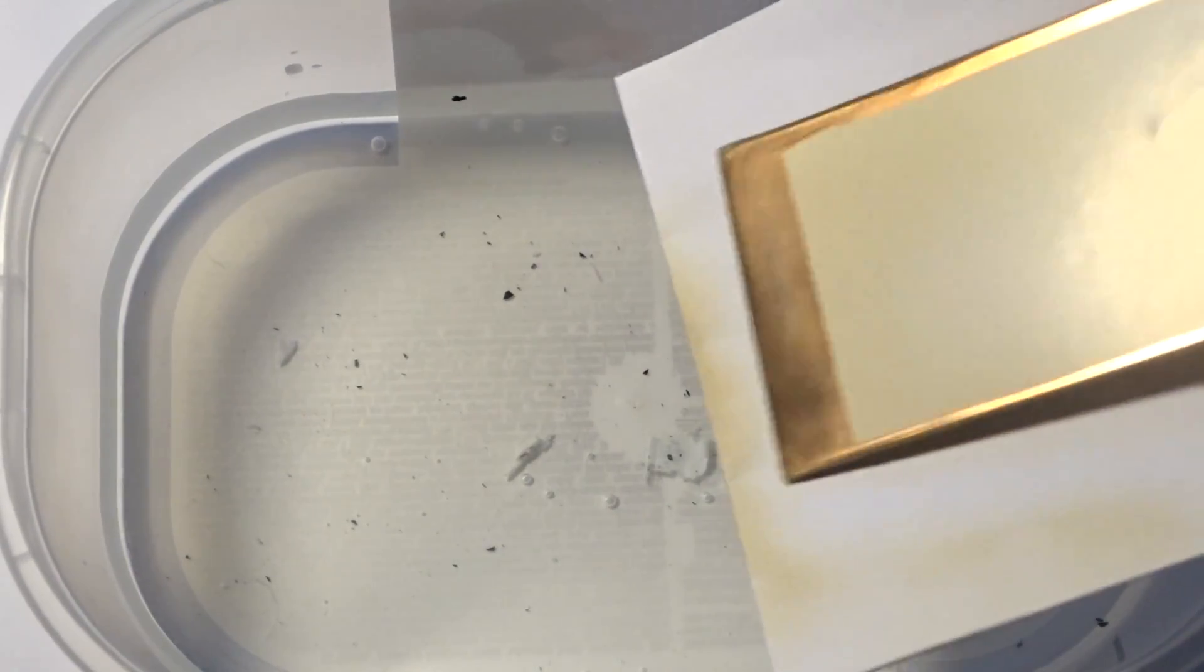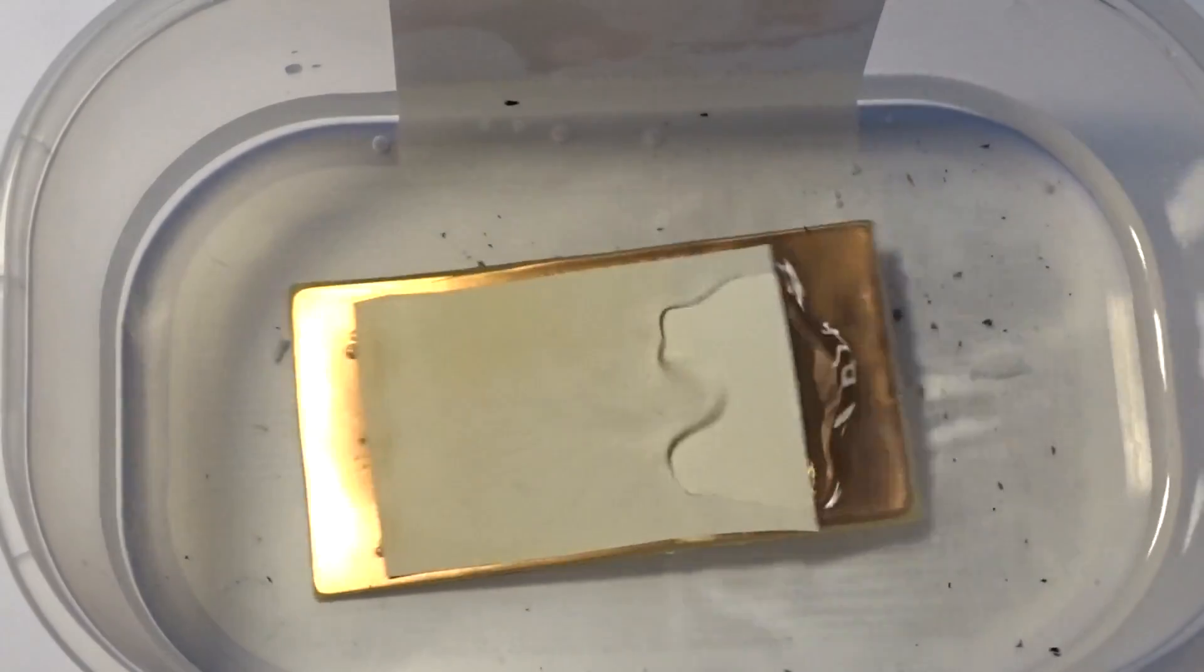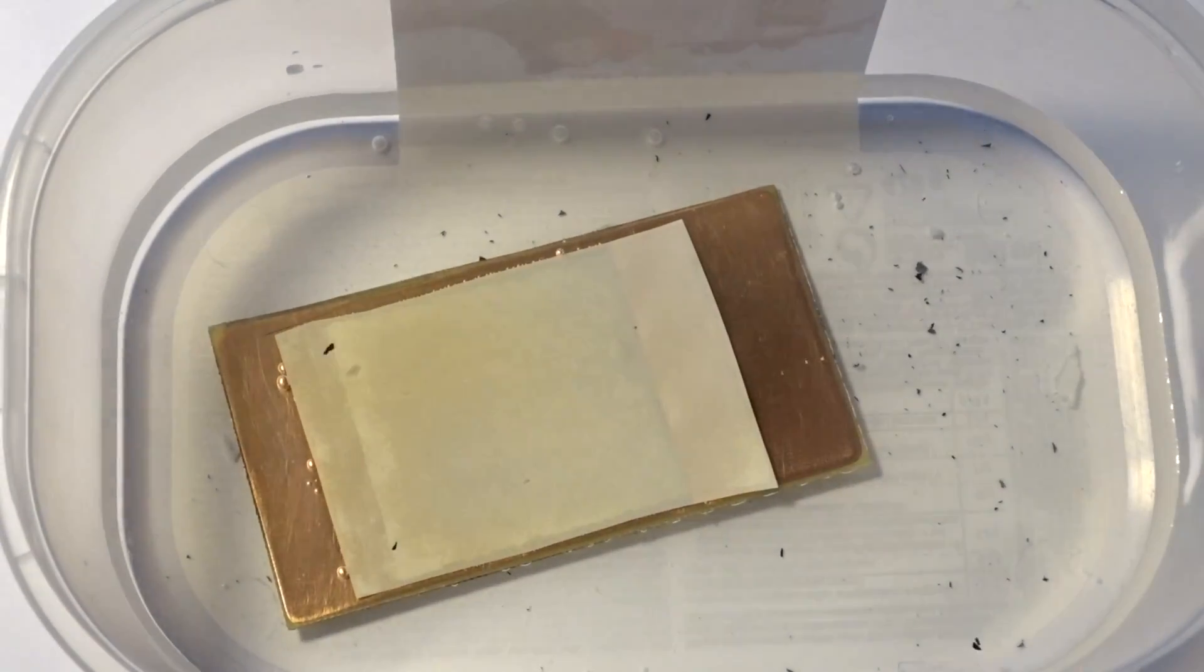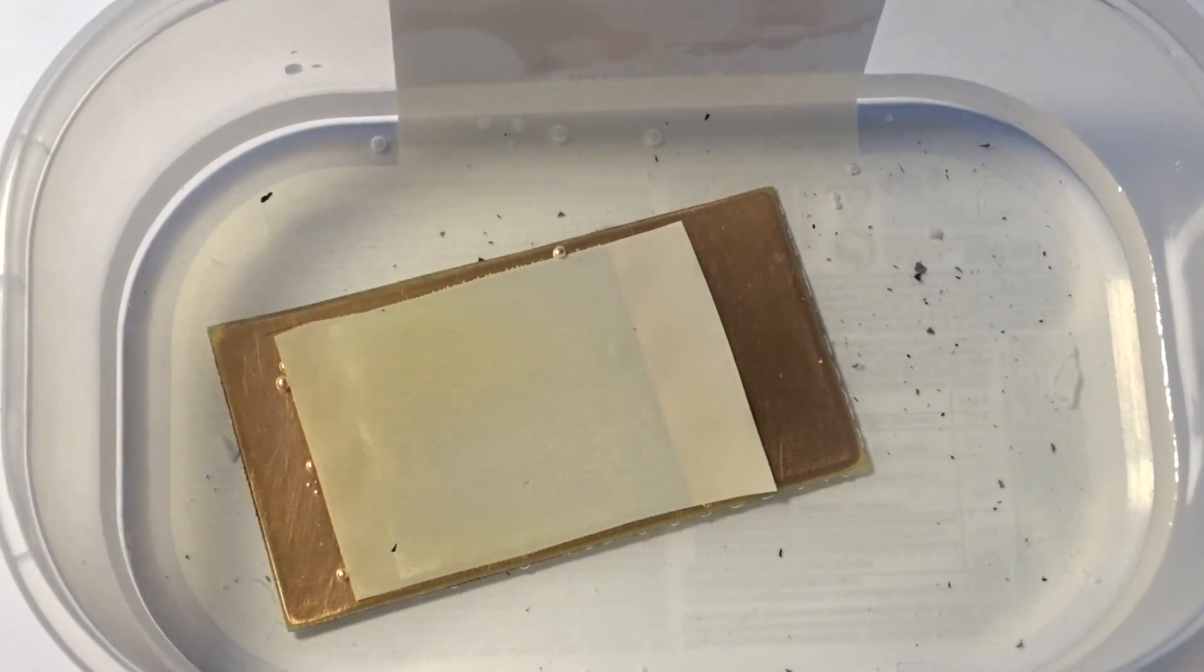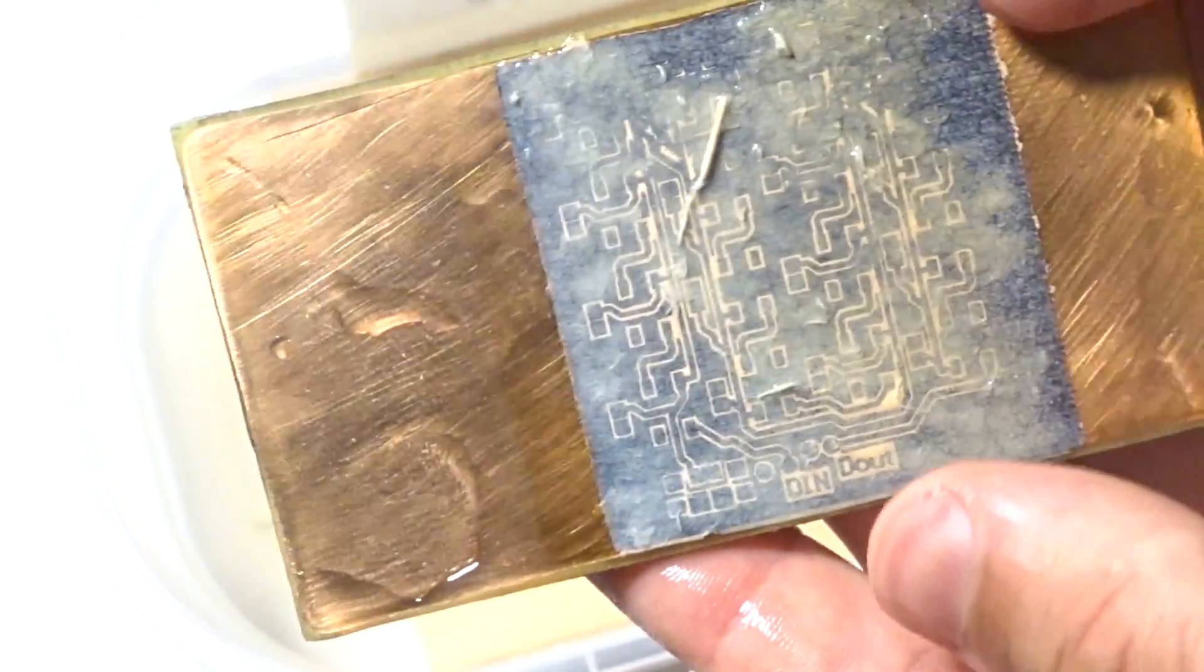Now we need to soak the paper so that I could easily remove it without destroying the design or circuit traces. I waited about 10 to 15 minutes until I could see the design and carefully removed the paper by rubbing my finger. Don't ever use sharp tools or you have to do it over again.